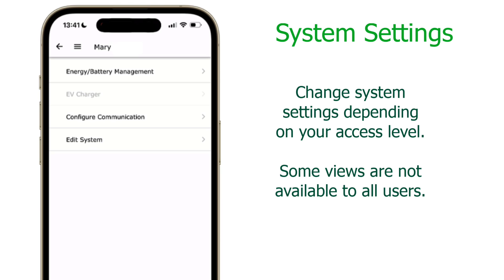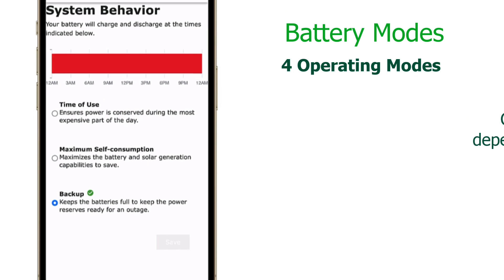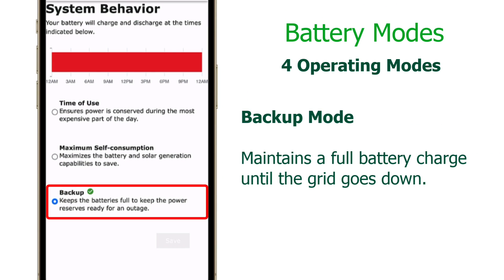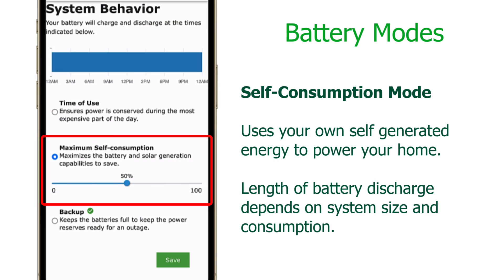Tapping the gear icon at the bottom of the screen takes you to the system settings screen. This allows you to view and change operating modes and test communication. Tapping Energy Battery Management lets you view and change the various operating modes. This system is configured for a backup application — in this mode, the batteries stay charged and only discharge when the grid goes down.